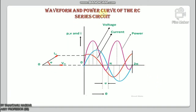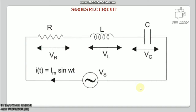The waveform and power curve of the RC circuit: the various points on the power curve are obtained from the product of the instantaneous values of voltage and current. The power is negative between angles (180° − φ) and 180°, and between (360° − φ) and 360°. In the rest of the cycle the power is positive. Since the area under the positive loops is greater than that under the negative loops, the net power over a complete cycle is positive.